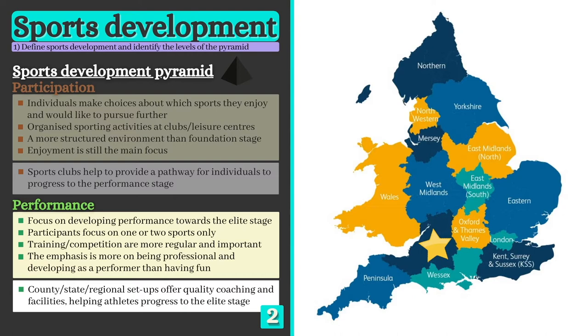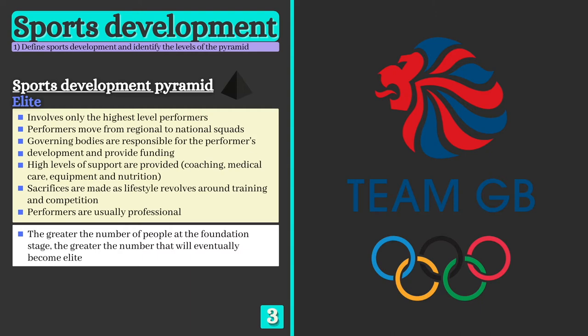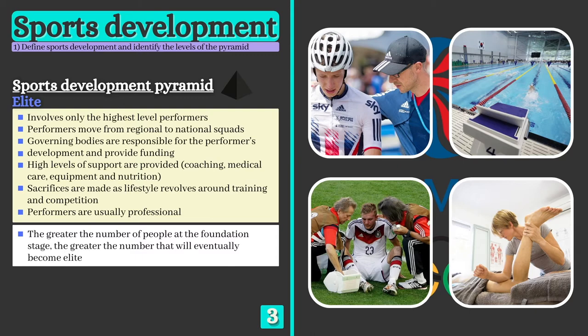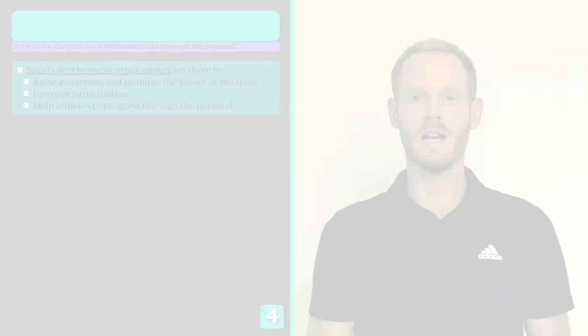The elite stage is the pinnacle of the pyramid, as only a small number of outstanding athletes manage to progress this far. Performers move on from regional to national squads, where they receive the highest quality professional support, including coaching, physiotherapy and medical care. Most elite performers are professional, meaning they're paid to compete and train full time. Their lifestyle completely revolves around their sport, meaning big sacrifices are often required.